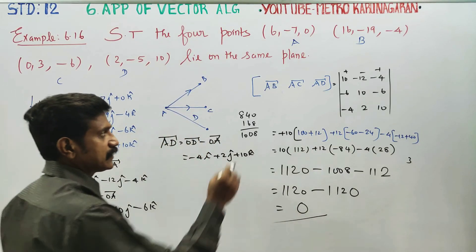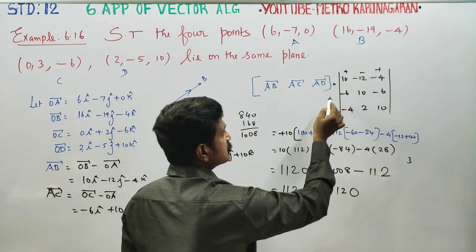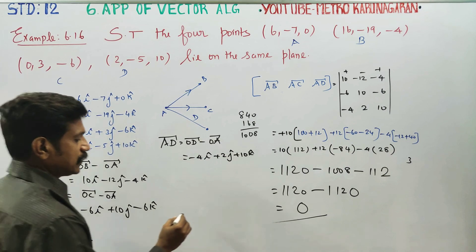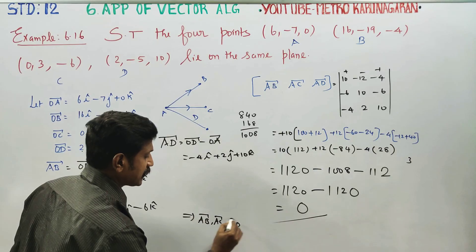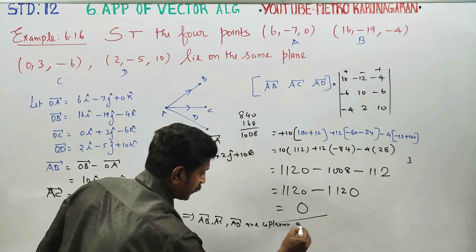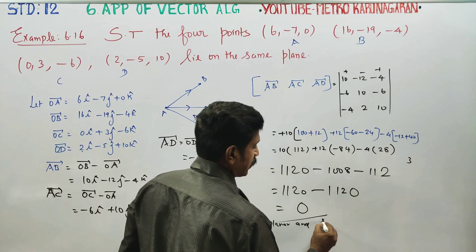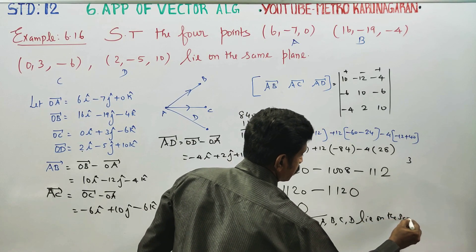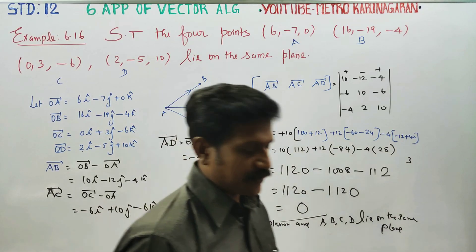The scalar triple product equals 0. Therefore the three lines AB, AC, AD vectors are coplanar, which implies the four points A, B, C, D lie on the same plane. Hence the given points lie on the same plane.